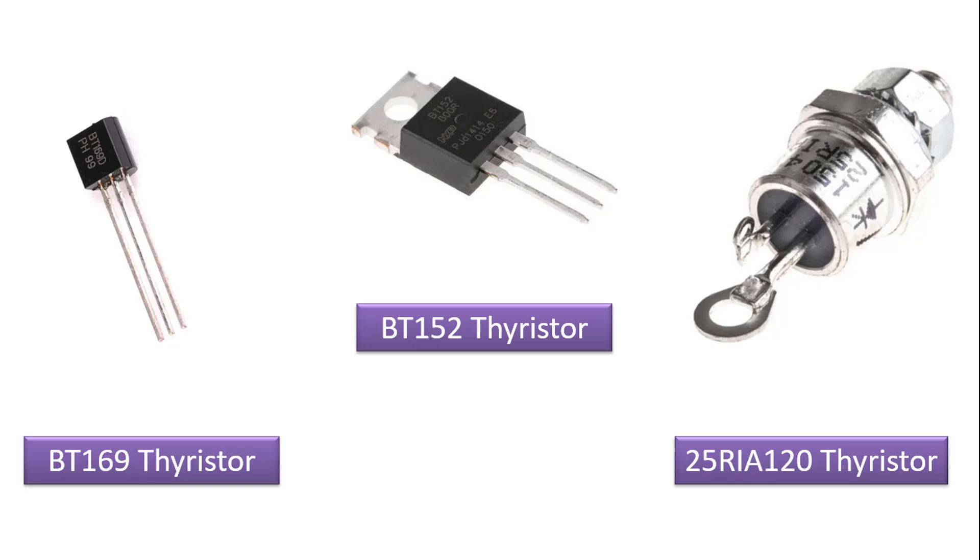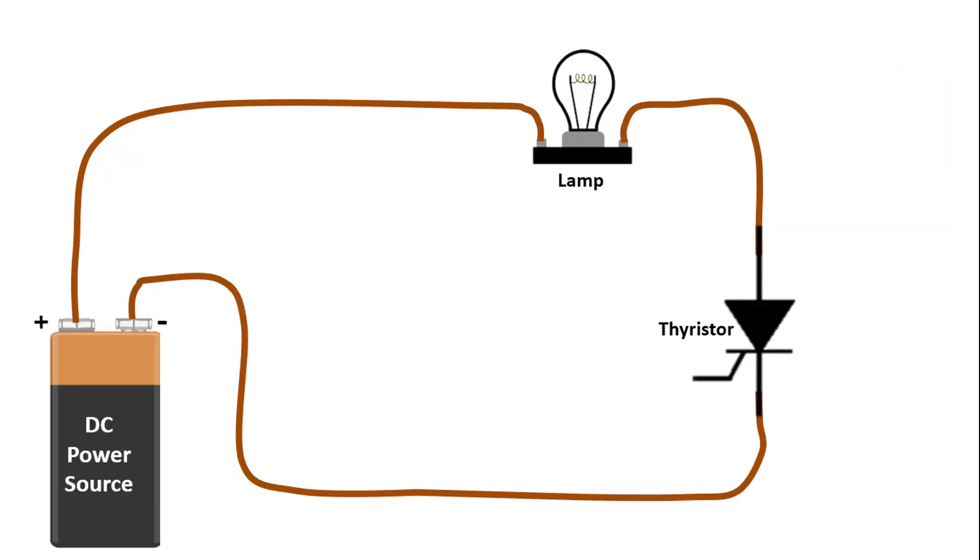To better understand the working principle of the thyristor, we can give the following example. Let's connect a lamp between the anode and cathode pins of the thyristor as you see here, and check the flashing of this lamp. When we connect the lamp in this way, the lamp will not give light because no current flows through the thyristor.